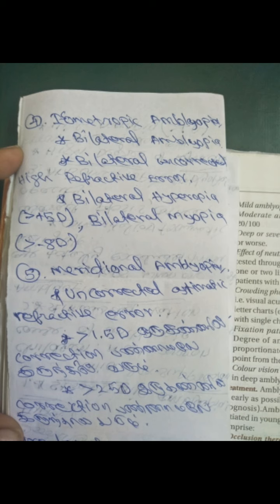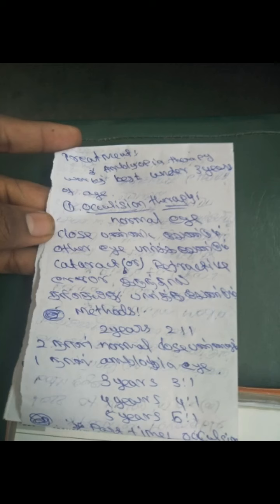Meridional amblyopia. This is a high hypermetropic patient. Meridional astigmatism — one power is not the only one; there are two different powers in different meridians. We can address that power with treatment. We can treat the refractive error and also apply additional treatment.